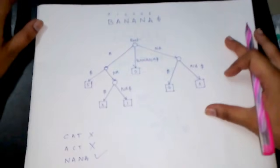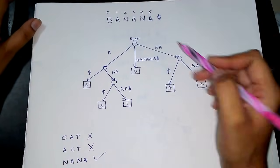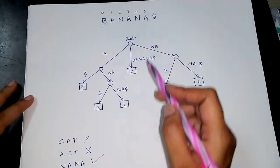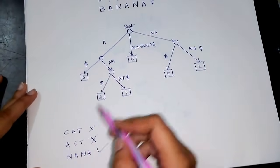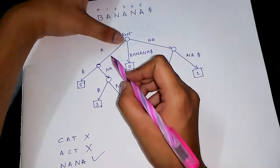...for all other nodes, this is how the suffix tree of banana looks like. It contains all the substrings of the string banana. Now we check if 'cat' is a substring of banana. We go to the root and check...